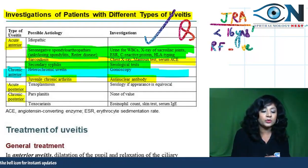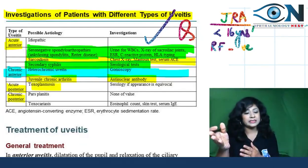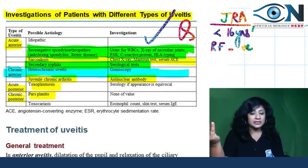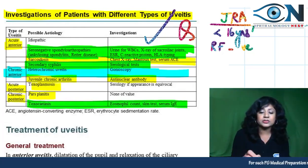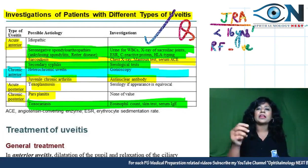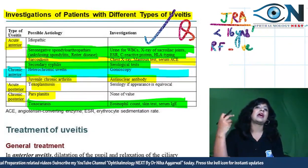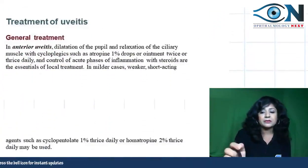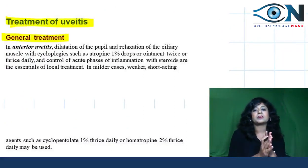For toxocariasis you can do eosinophil count, skin test, and IgE levels. These flowcharts are important to mark and review. Now moving to the treatment part of uveitis, starting with general treatment.